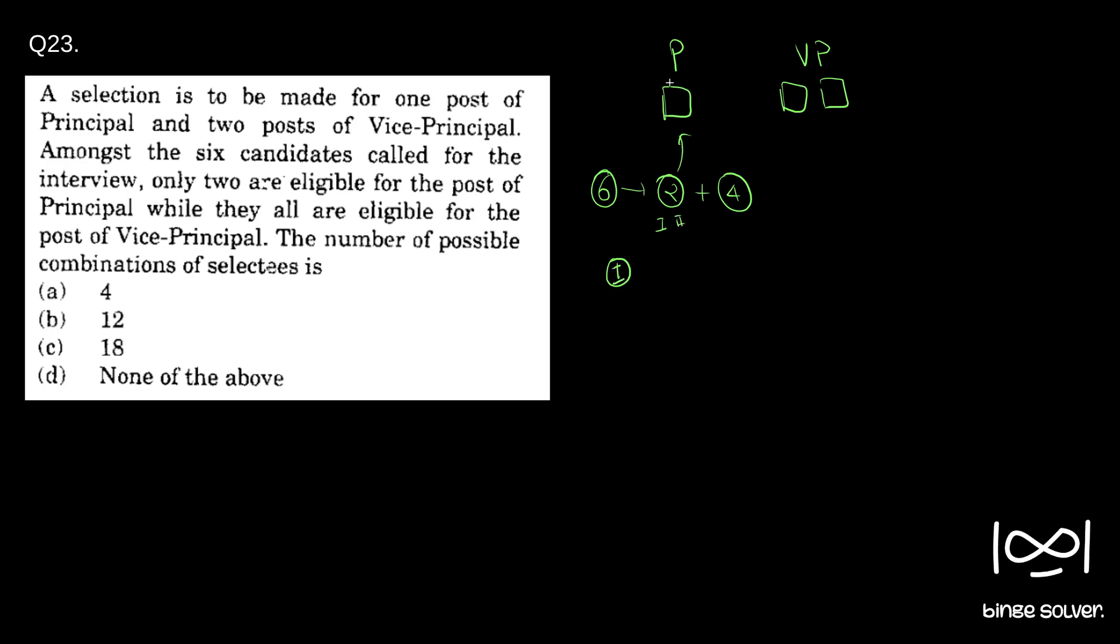When one is selected for the principal post, there are five candidates left for vice-principal post and we have to select two people from them. So that is a classic way of saying 5C2. When one is the principal, there is 5C2 ways to select vice-principal, which is 5 into 4, 2 into 1, that is 10.